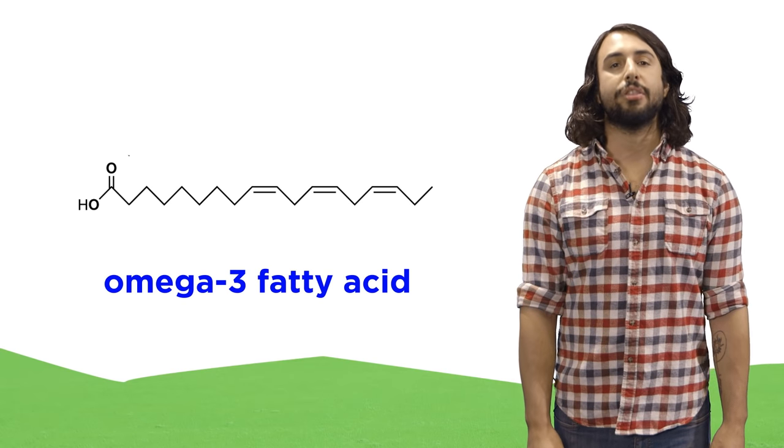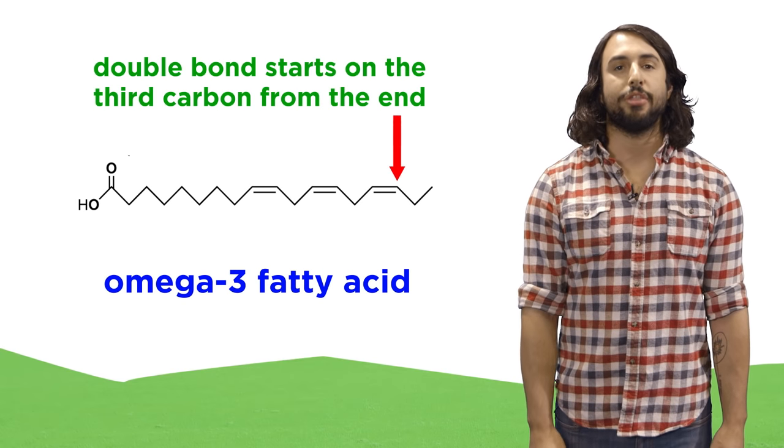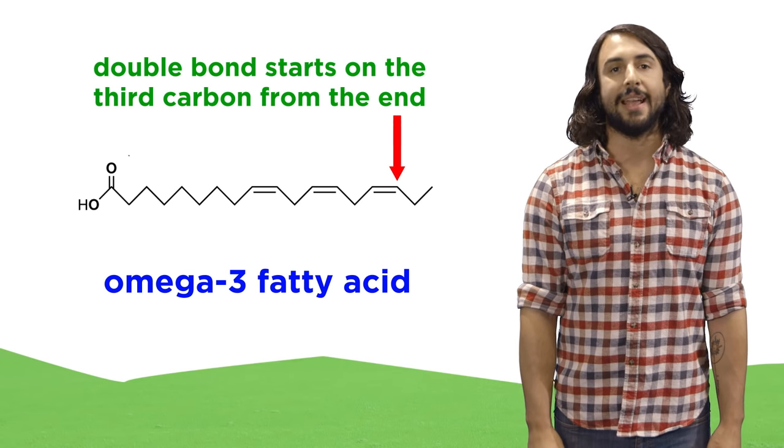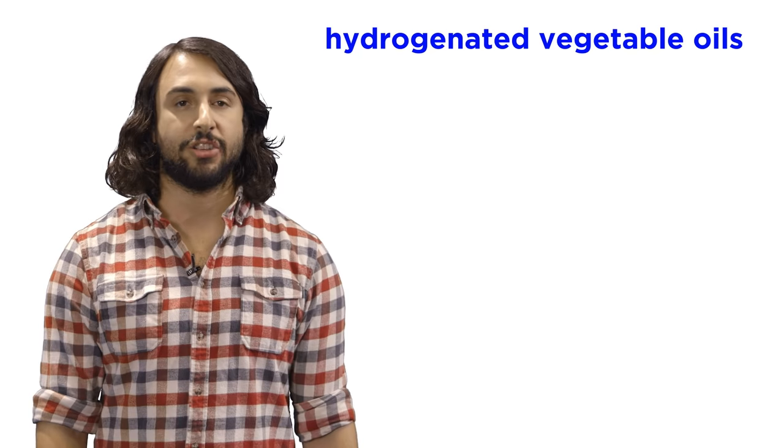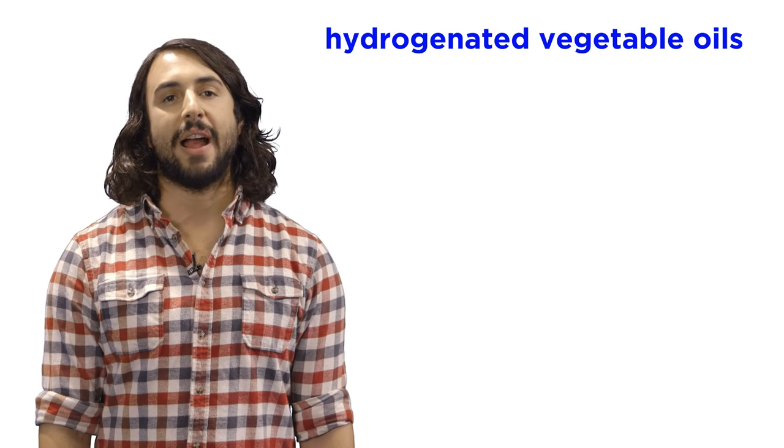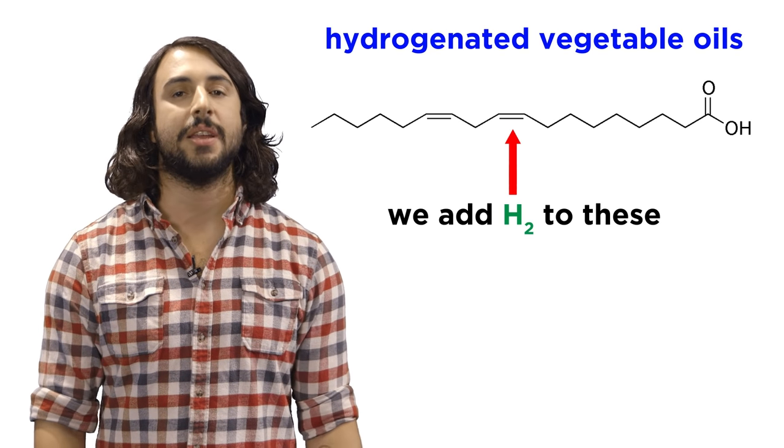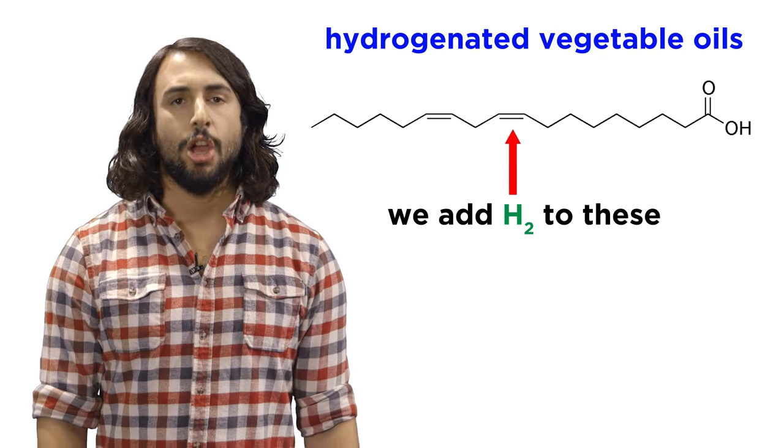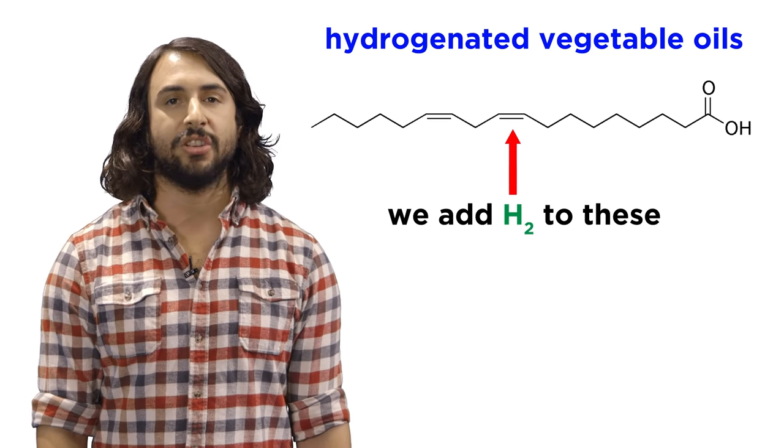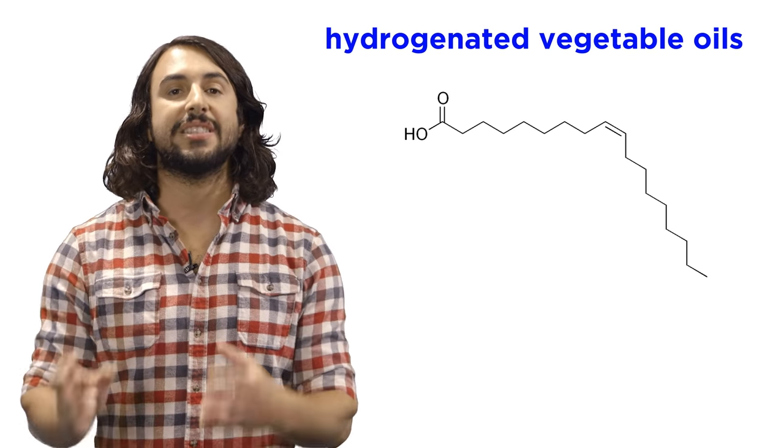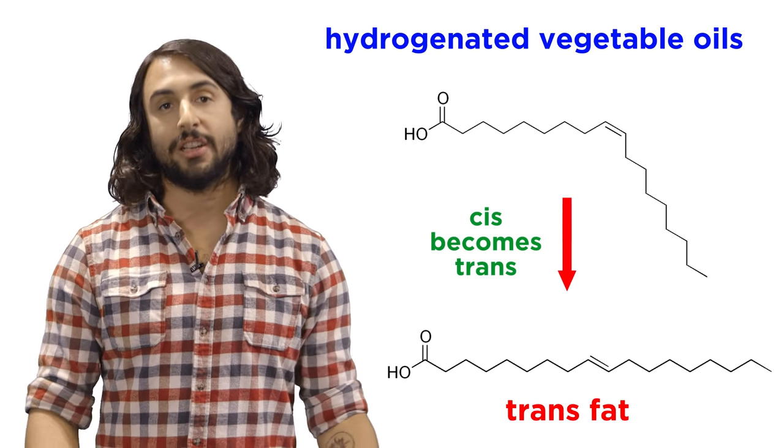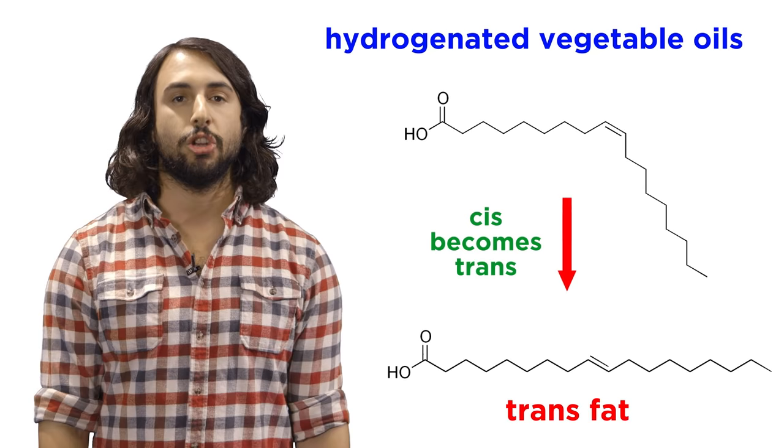An omega-3 fatty acid is one where the third carbon from the end of the chain is participating in a double bond. When we talk about hydrogenated vegetable oils, these are derived by hydrogenating some of the double bonds in polyunsaturated fats. One problem with partial hydrogenation is that it can sometimes isomerize double bonds, turning cis into trans, resulting in trans fats, which as we said should be avoided.